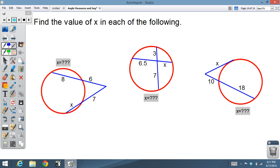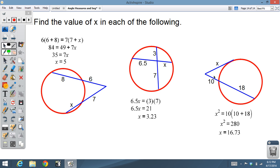And for those who want to walk through it with me, here we got two segments intersecting outside. 6 times the total 14 equals 7 times 7 plus x. Distribute the 7, simplify the left side, subtract the 49, divide by 7. Same thing's going to happen here, a times b equals c times d. So six and a half times x equals 3 times 7. Simplify, x equals 3.23. And then last and not least, x squared equals 10 times 28, that's 280. Take the square root, there we go.